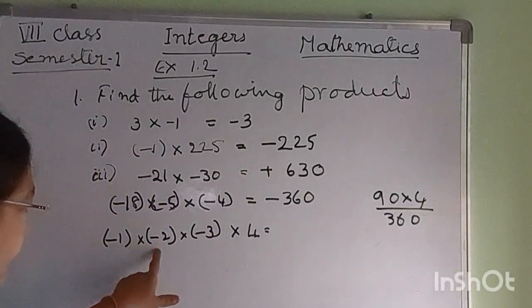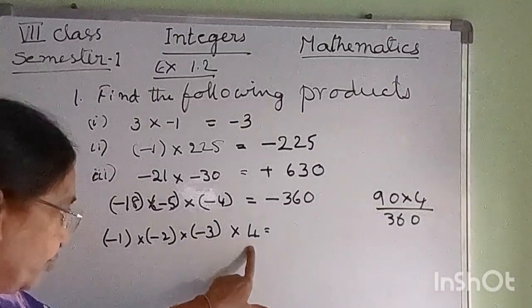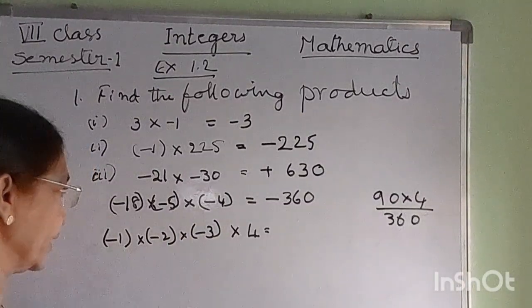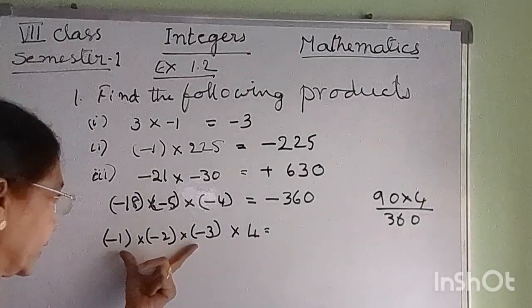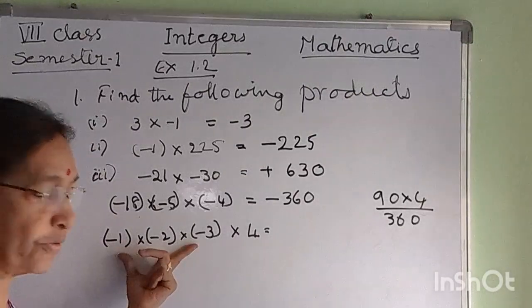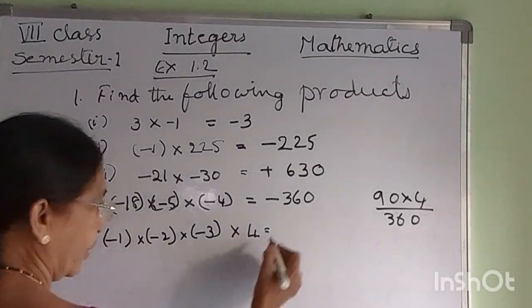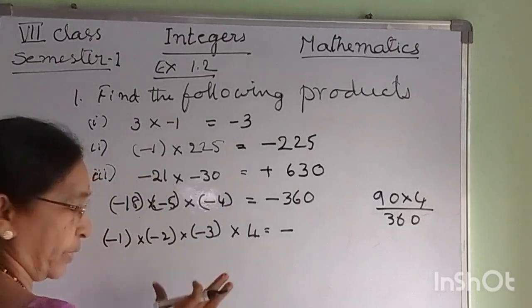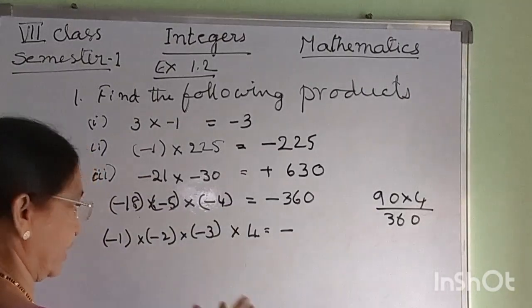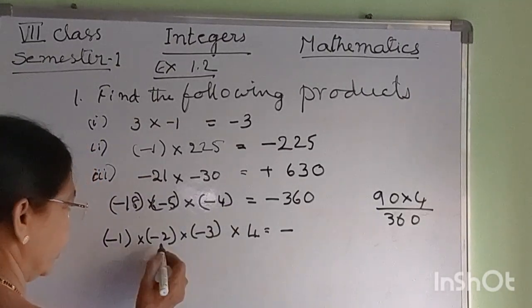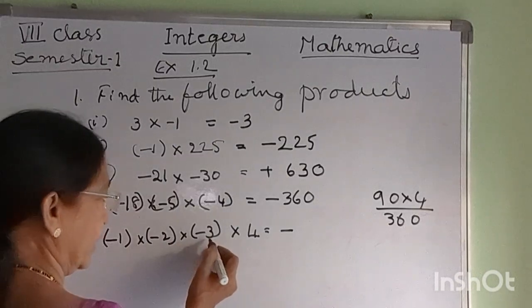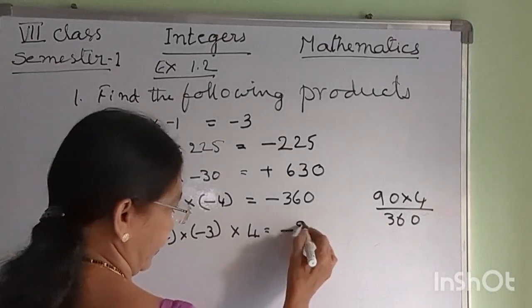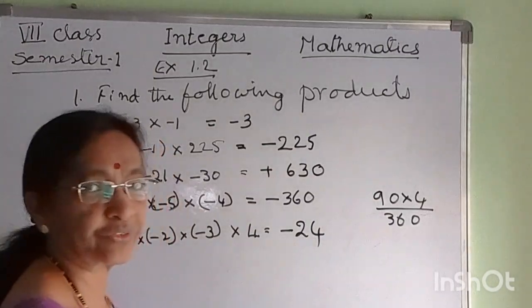Minus 1 into minus 2 into minus 3 into 4: there are 4 integers, but 3 have a negative sign. Three is an odd number, so we get a negative sign. Computing: 1 times 2 is 2, 2 times 3 is 6, 6 times 4 is 24. Therefore the answer is minus 24.